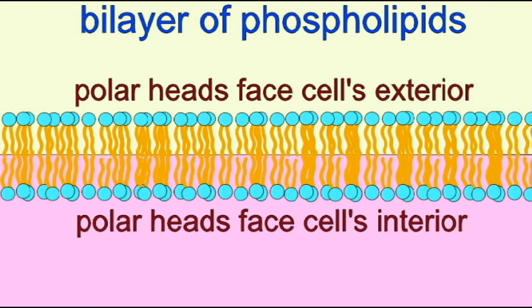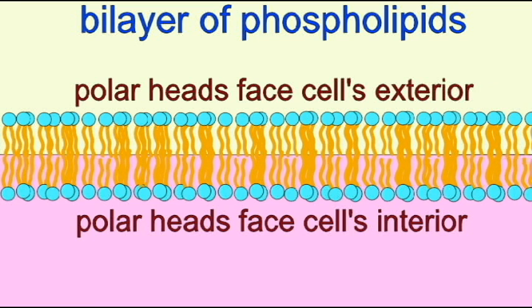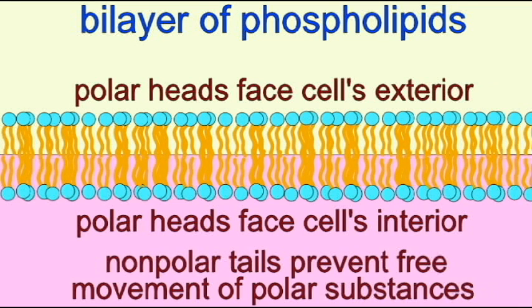As a result, these nonpolar tails form a barrier to most of the components both inside the cell and out which are polar or charged.